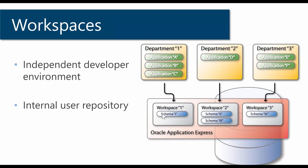It is also possible to have a schema associated to multiple workspaces. For example, schema three — a global schema with lots of utilities — can be associated to workspace one, two, and three, or any combination thereof. Really, it's just a many-to-many relationship under the hood.